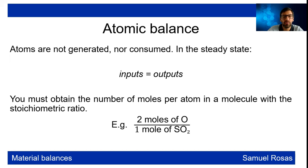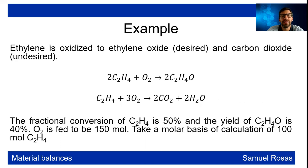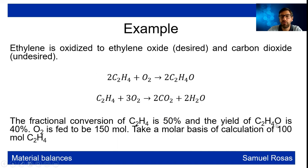We're going to work with an example. Ethylene is oxidized to ethylene oxide (C₂H₄O), which is the desired product. Carbon dioxide can also be formed, which is undesired. The fractional conversion of C₂H₄ (ethylene) is 50%, and the yield of C₂H₄O (ethylene oxide) is 40%. O₂ is fed at 150 moles, taking a molar basis of calculation of 100 moles of C₂H₄.